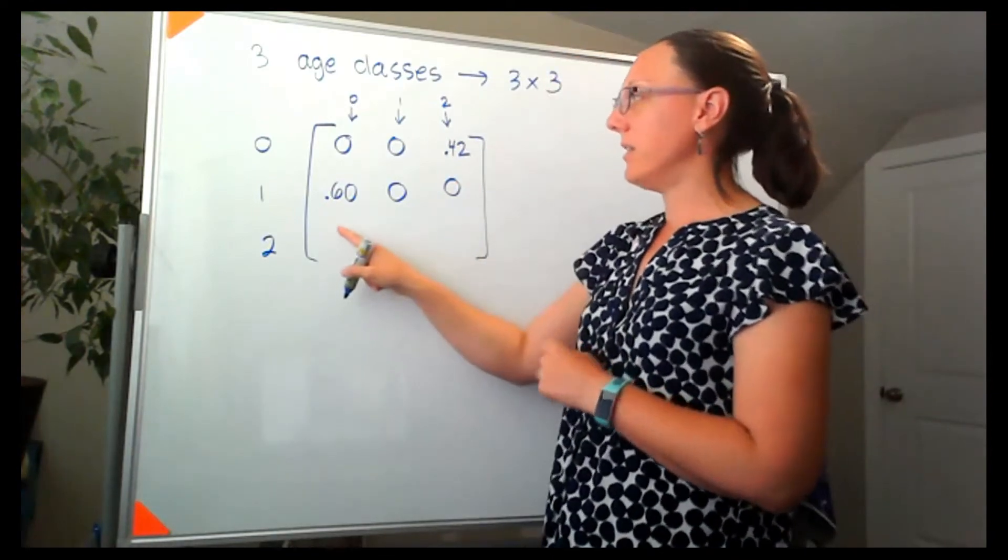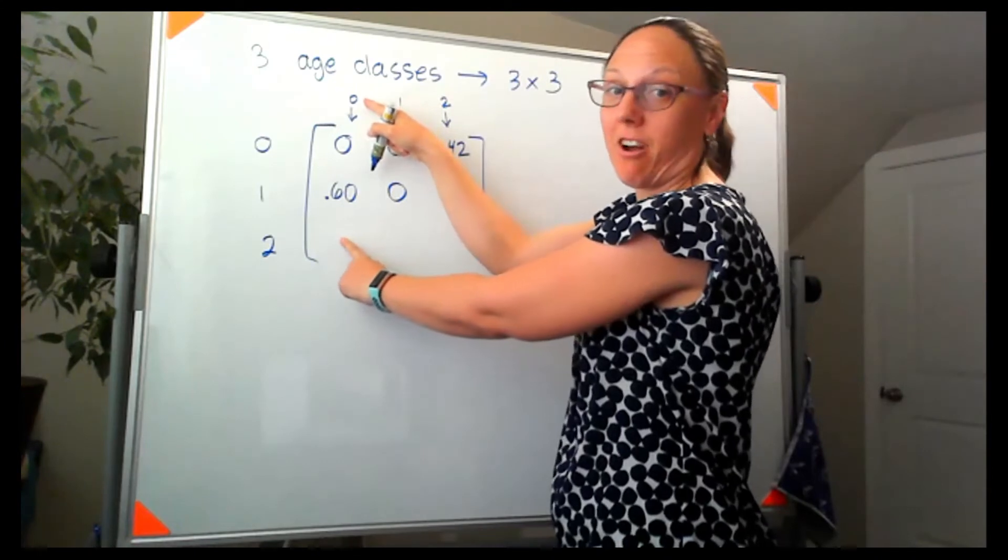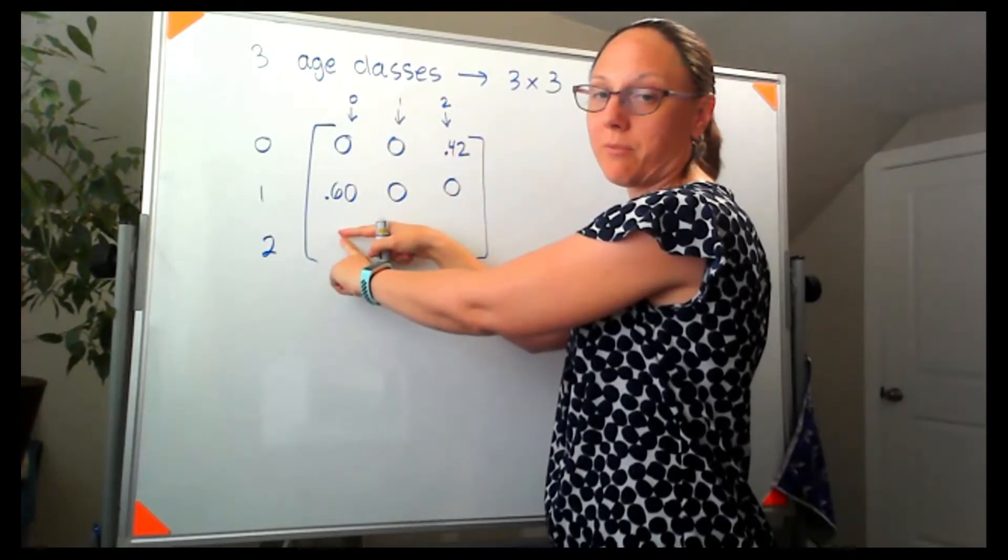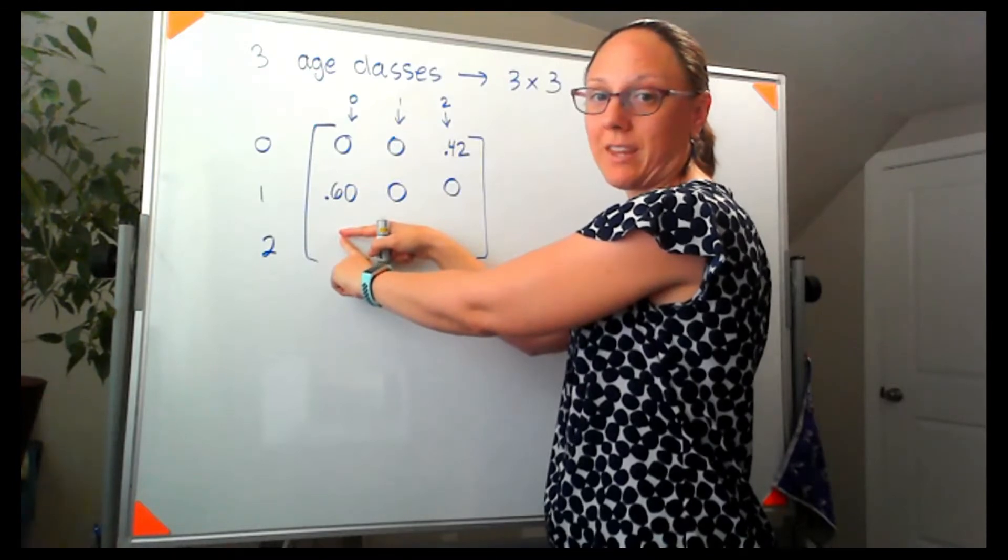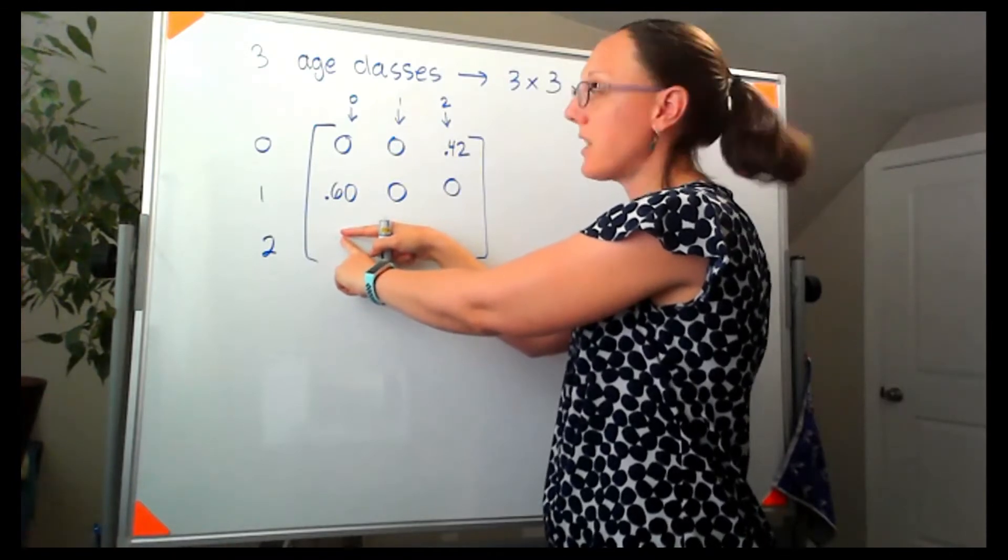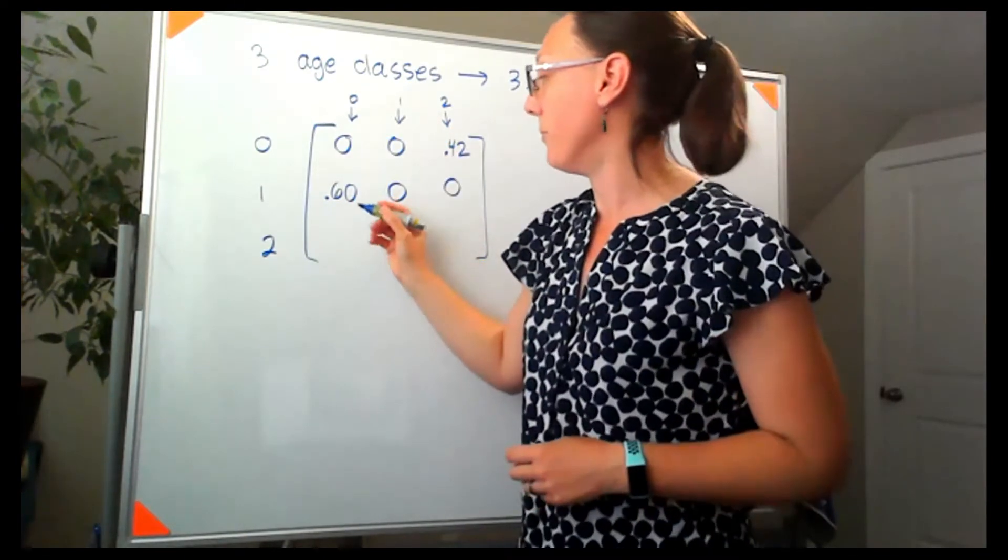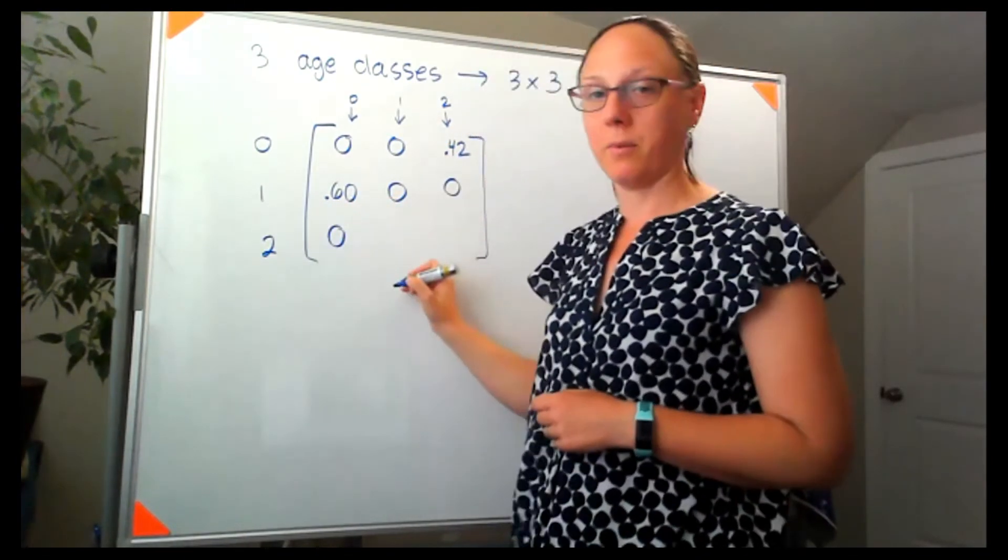This row is telling me how many age class 0 would grow up to be age class 2. Well, I've made this joke before but unfortunately kids can't go straight to being adults. They've got to be kids first. So I can't go straight from age class 0 to age class 2. That's going to be a 0.